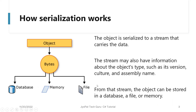This is a standard pictorial representation showing how objects are converted to bytes, and those bytes are stored in either a database, memory, or a file. The object is serialized to a stream that carries the data. The stream may also have information about the object's type, such as its version, culture, and assembly name.